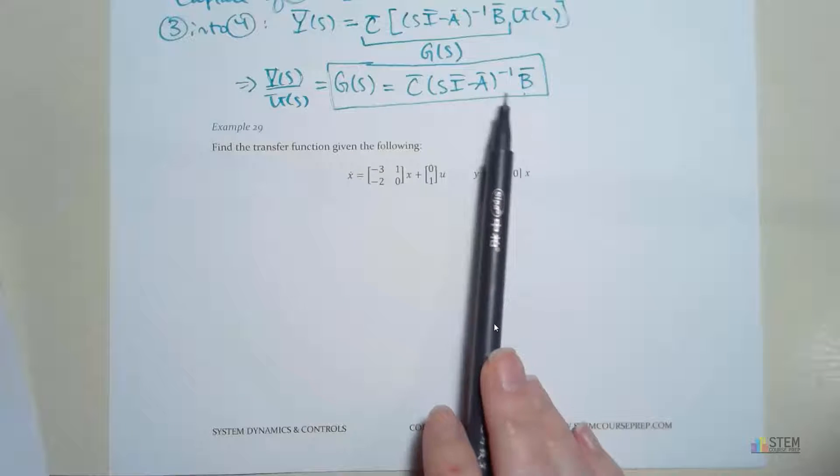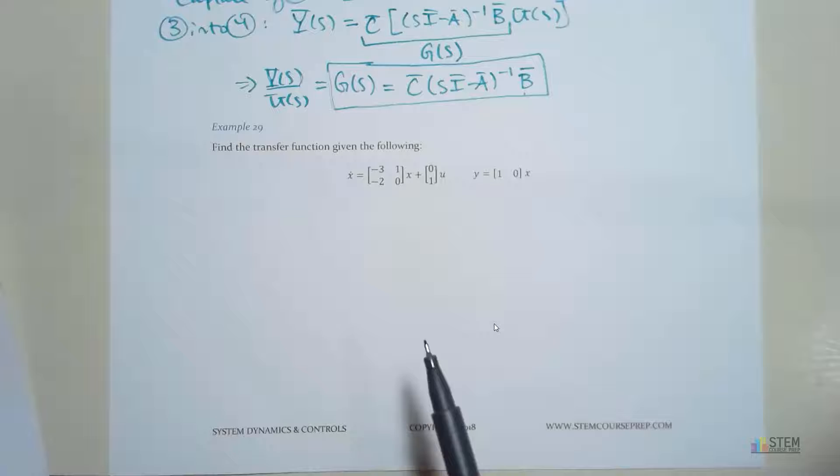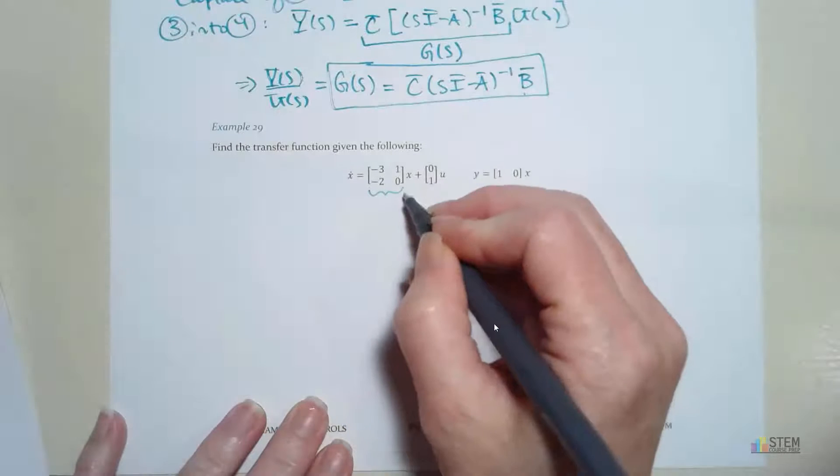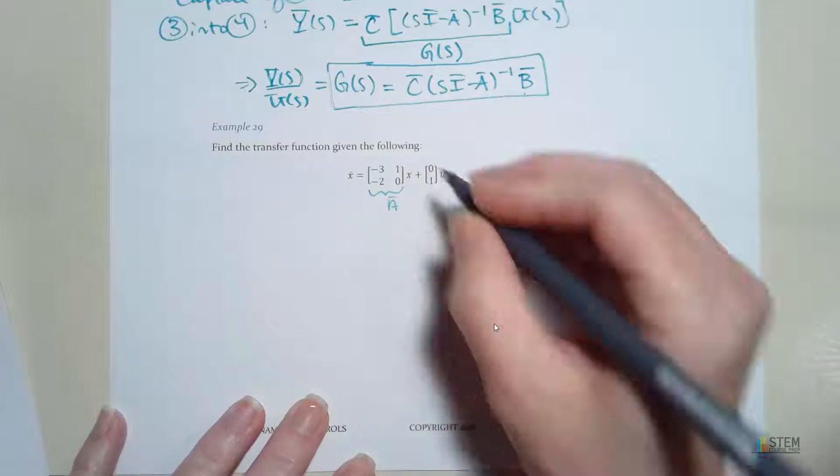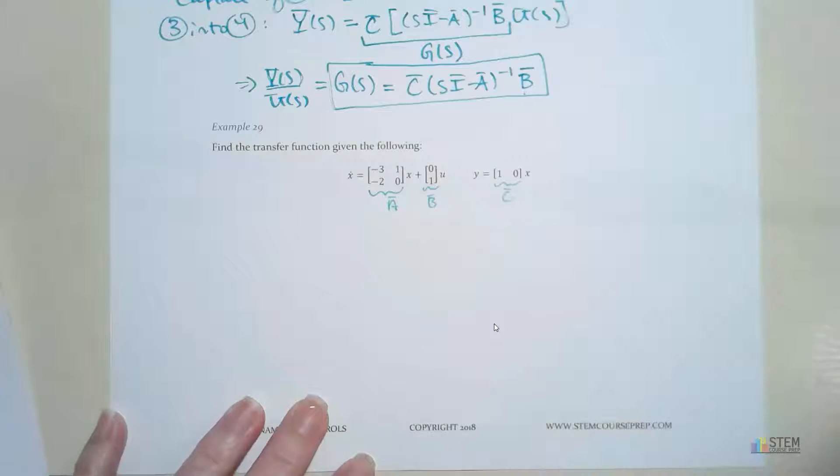First thing you have to do is figure out what A, B, and C are. That is easy, because you're looking right at it. So this here is A, this one is B, and that is C. Super easy. You just pull it out of the state-space representation.